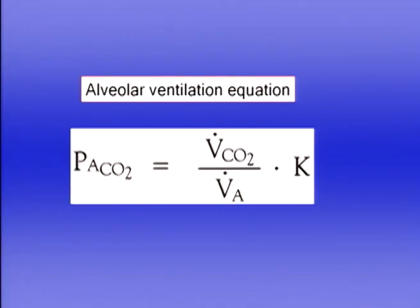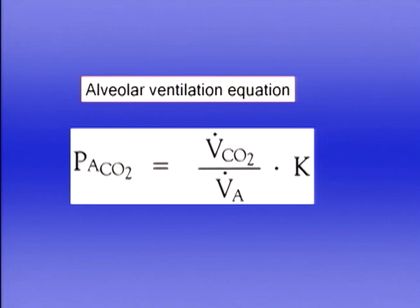The alveolar ventilation equation tells us there is an inverse relationship between PCO₂ and the level of alveolar ventilation for a given CO₂ production. CO₂ production is determined by peripheral tissue metabolism and doesn't change much at rest. So in general, there's an inverse relationship between PCO₂ and alveolar ventilation: if we double alveolar ventilation, PCO₂ halves; if we halve alveolar ventilation — as in hypoventilation — PCO₂ doubles.